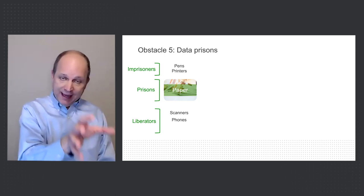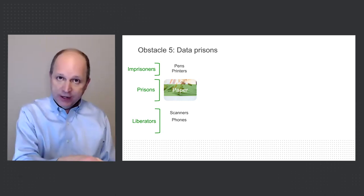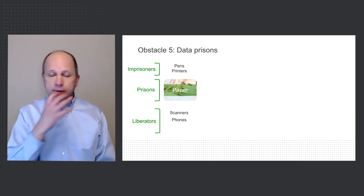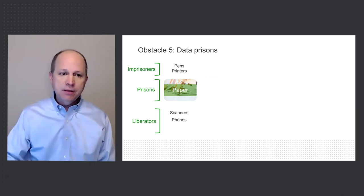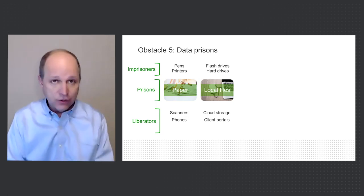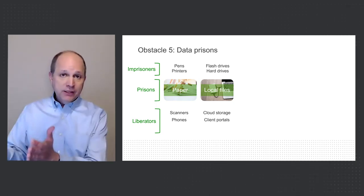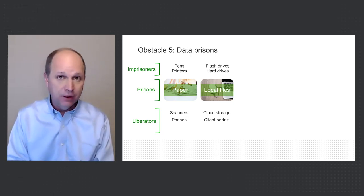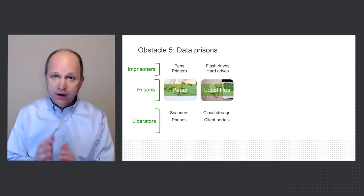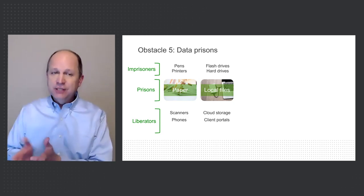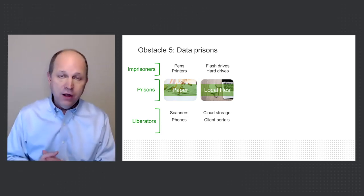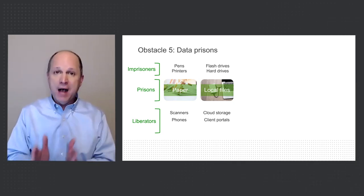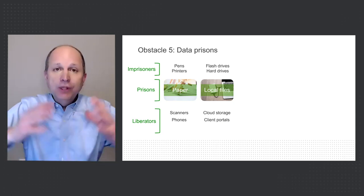Scanners and phone capture liberate the data off the paper and make it ubiquitous, available, and integrated. The more we imprison data through pens and printers — anytime you're using ink, you are an imprisoner of data. But don't think you're liberating it just by placing it in some system that isn't shared: flash drives and hard drives are imprisoners of data too. If you place all your information in Microsoft Word and store it on your C drive, you and your team can't get to it unless you're in front of that particular computer. That's where cloud storage systems, client portals, and solutions like OneNote come in — but typically files are more like Dropbox or Box.